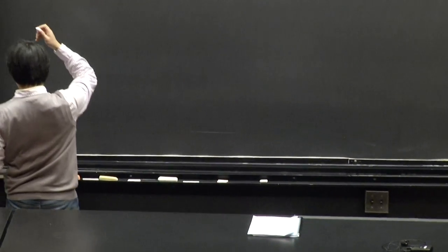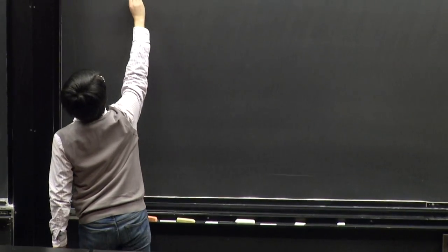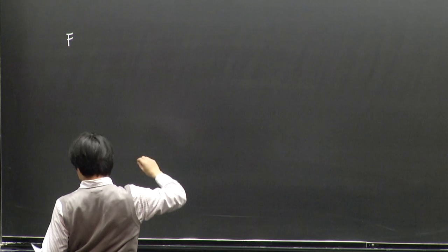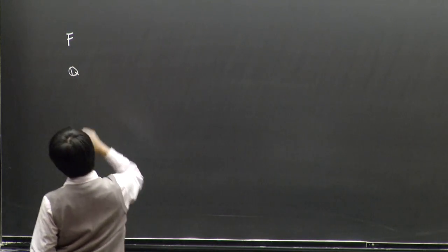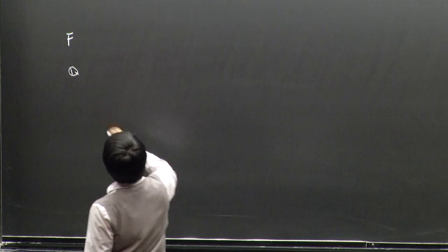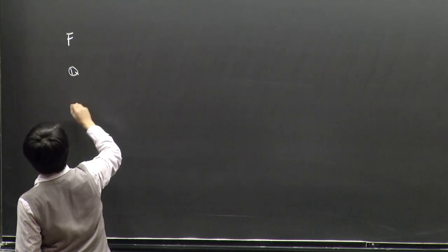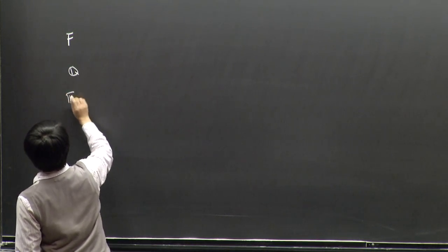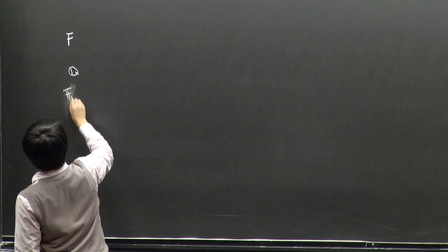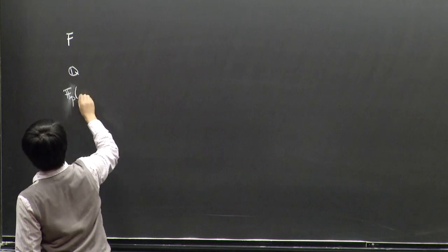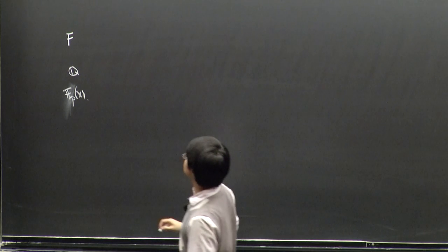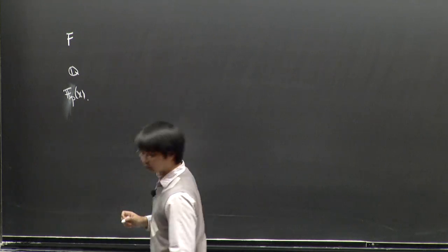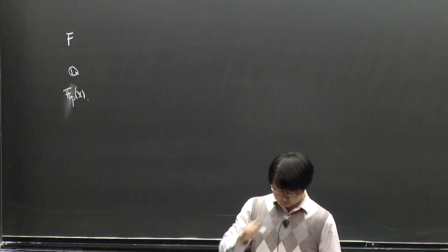Let's start with an analogy we all know from our first course in number theory: there's an analogy between the field of rational numbers and function fields of one variable over a finite field.